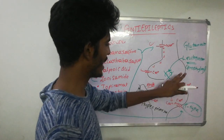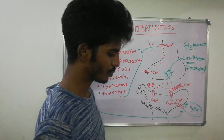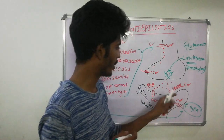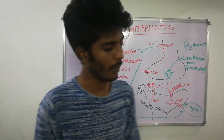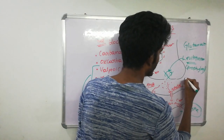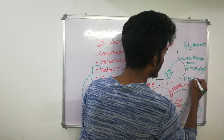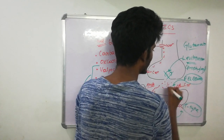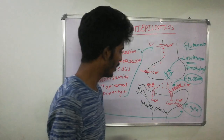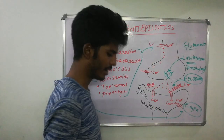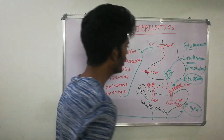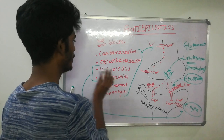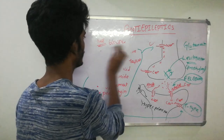Regarding NMDA blockers, we have a drug called felbamate, which inhibits the NMDA receptor. So the NMDA blocker is felbamate. We are now done with the important anti-epileptic drugs, but let's talk a little more about valproic acid.